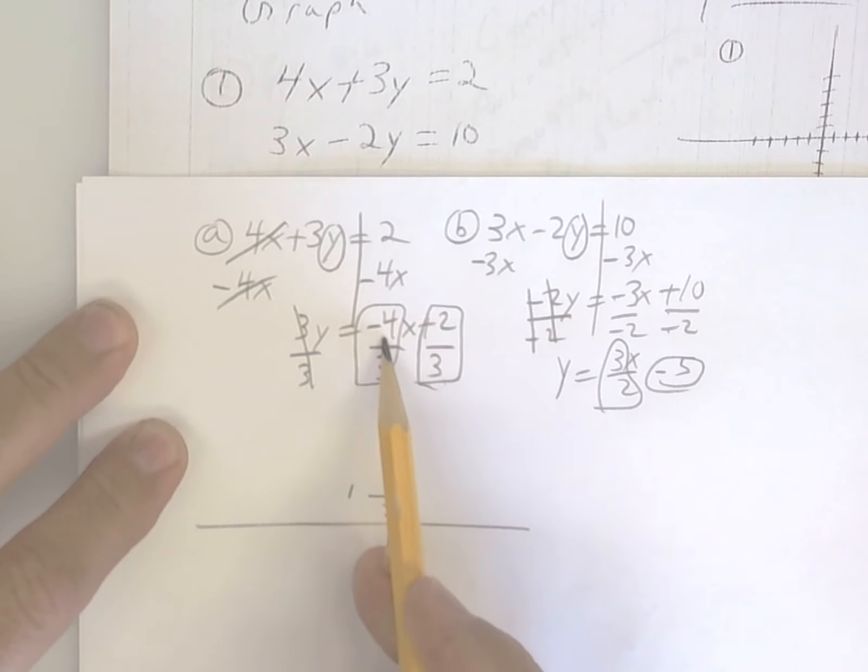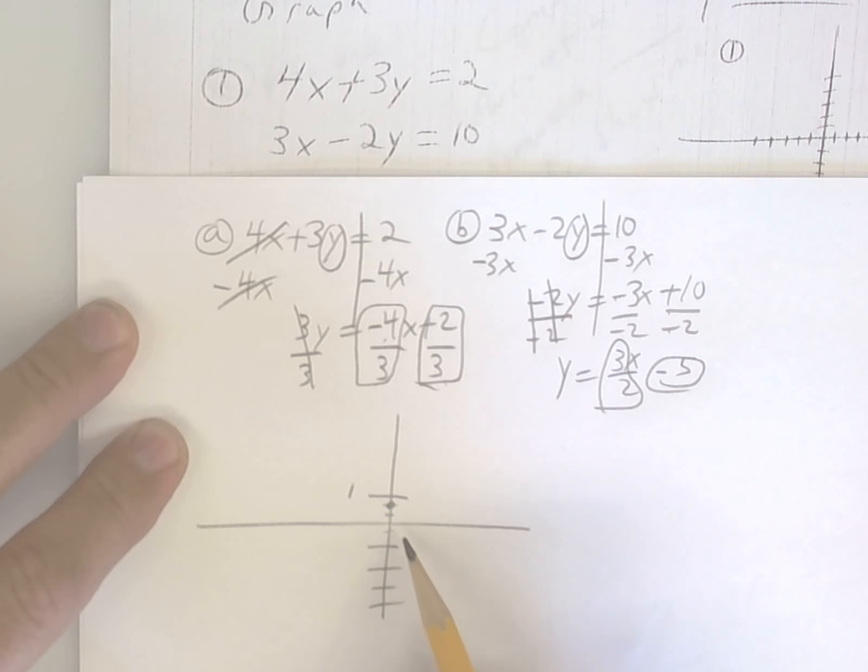Then you've got to go down 4 over 3. So down 4. But you see how it's a little bit below? So it's going to be 1, 2, 3, 4, and then over 3.